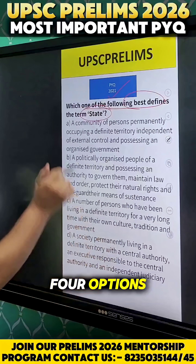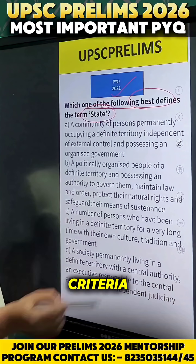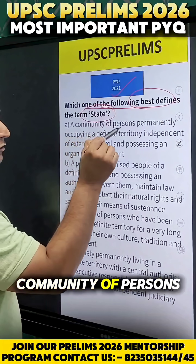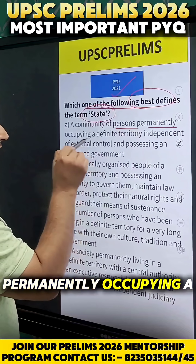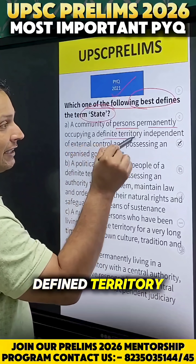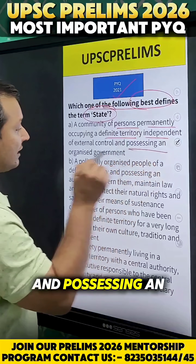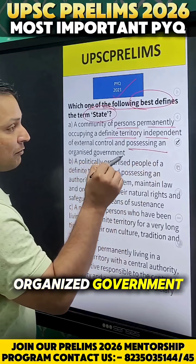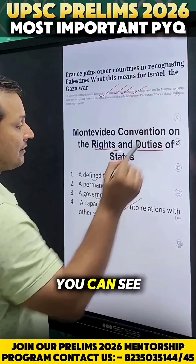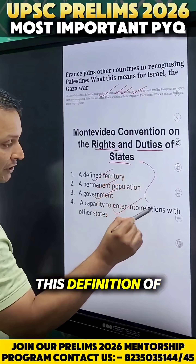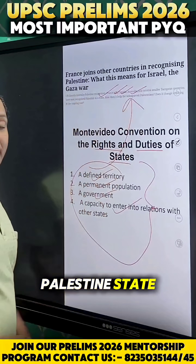Out of these four options, option A meets this criteria: a state is a community of persons permanently occupying a defined territory, independent of external control and possessing an organized government. This is the correct answer. You can see this definition of state is currently in use because of the Palestine state recognition.